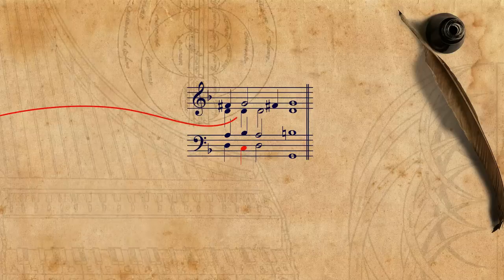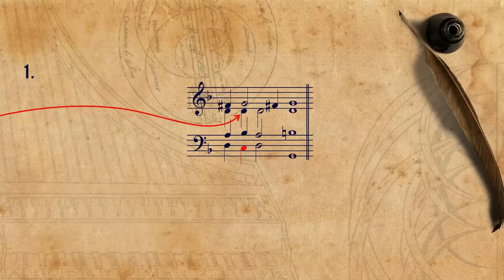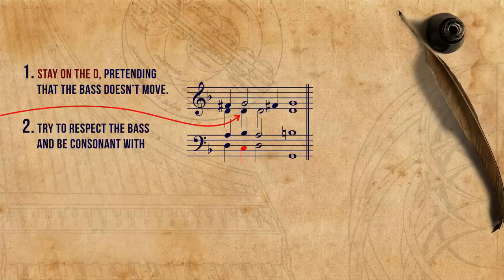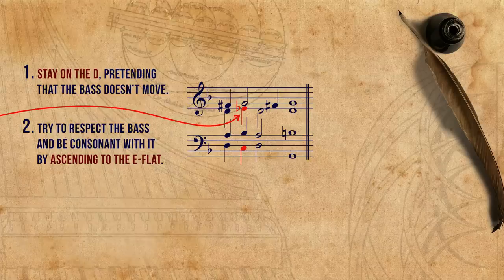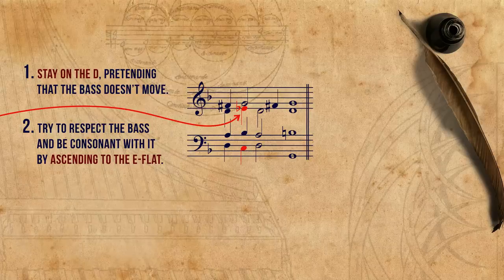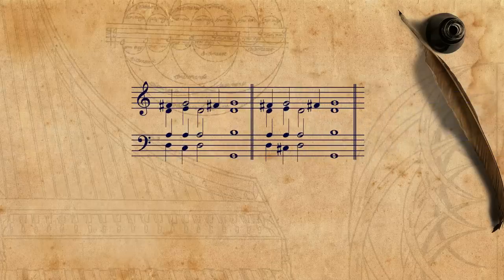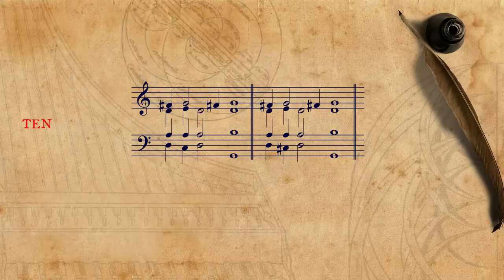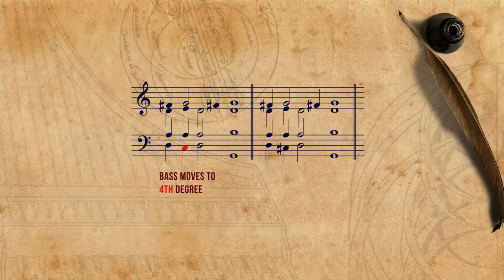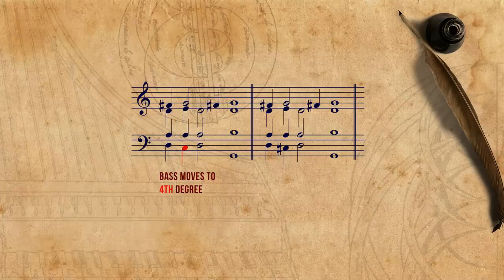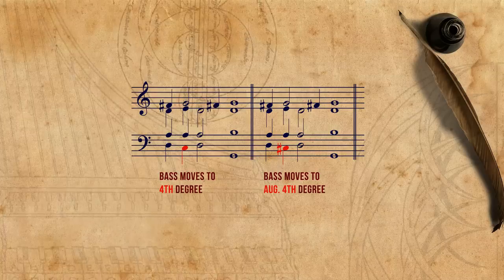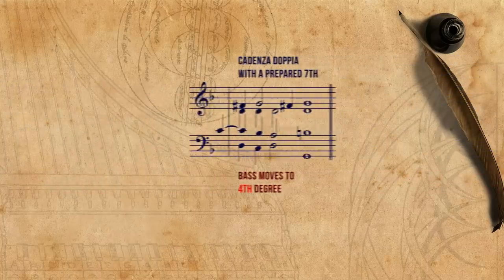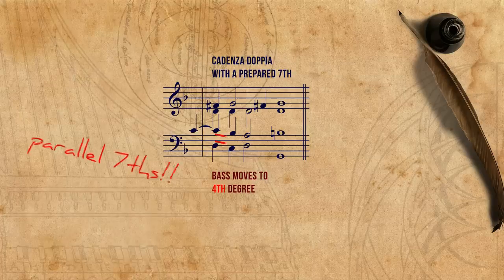For example, in this variant of the bass, the alto voice has two options: one, stay on the D, pretending that the bass doesn't move although it does; or two, try to respect the bass and be consonant with it by ascending to the E flat. In these two cadences, I used the variant where the tenoritzans is stationary, and moved the bass once to the 4th degree and once to the augmented 4th degree. And if we move the bass to the 4th degree while playing a cadenza doppia with a prepared 7th, it gets even better, as parallel 7ths are created.